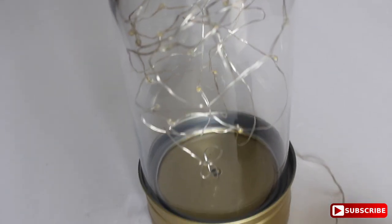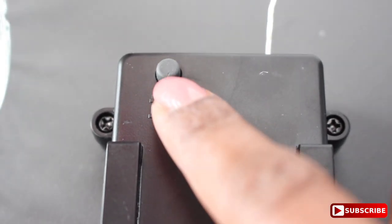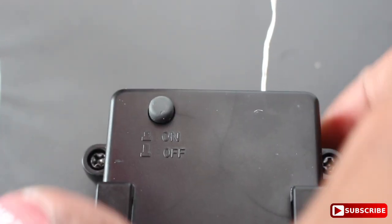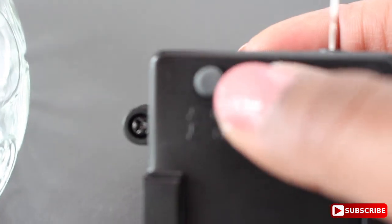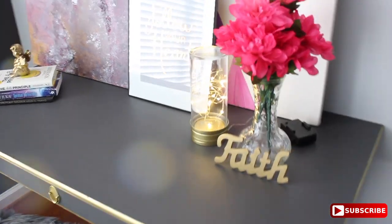You may have to adjust it as needed. So this is the battery pack. All you do is just press the button to turn it on and press it again to turn it off. You can always hide the battery pack behind something.